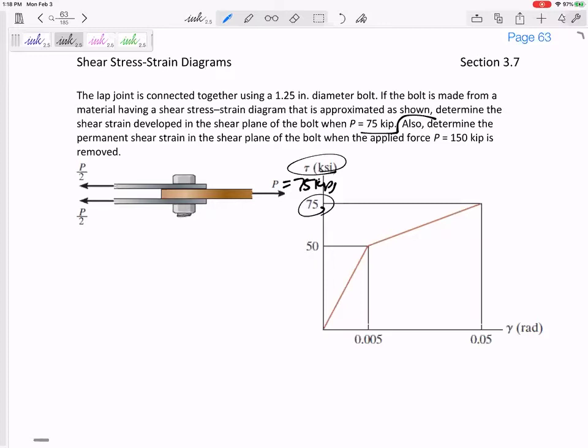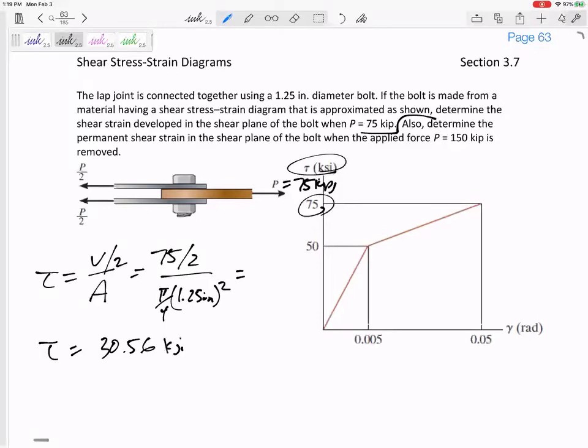We've got to calculate the shear stress for a bolted double shear joint. What is the shear stress? V over A, but we need to divide that 75 by 2. So 75 divided by 2 over the area π/4 times 1.25 squared. This is kips over inches squared. The shear stress is 30.56 KSI. Do you wish that we had just given you the 30.56 KSI on a silver platter so you could go to your diagram? That's not gonna happen.